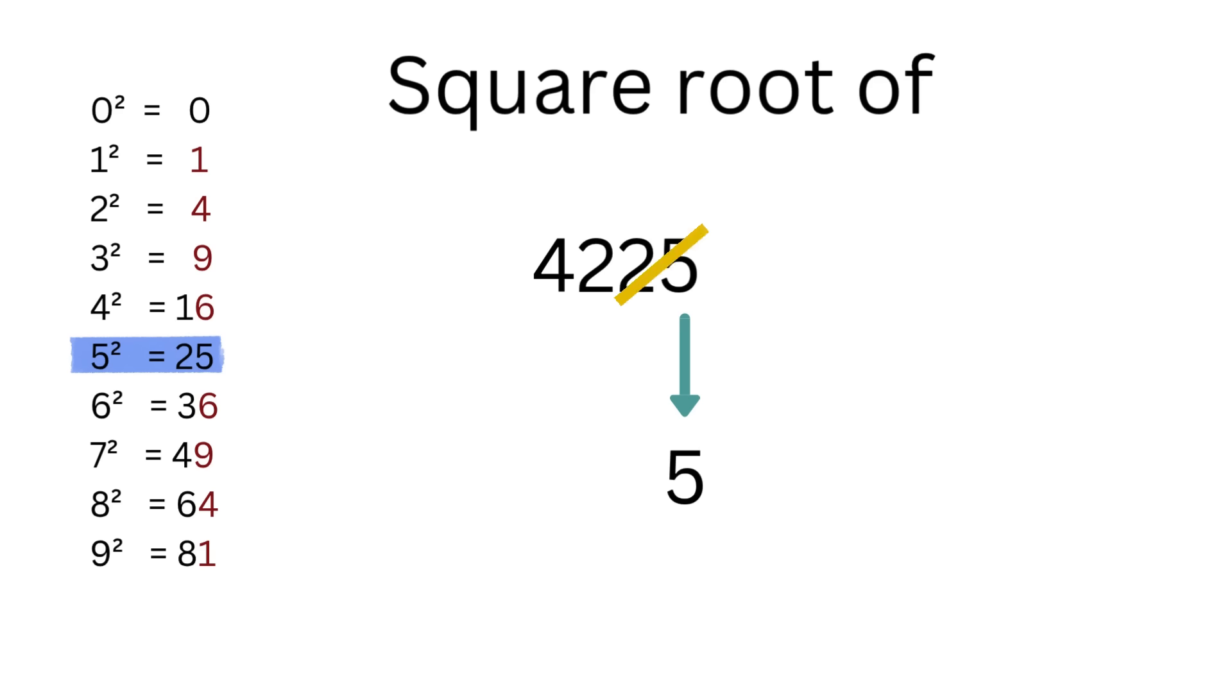We then cross out the last two digits. We now want the square that's closest to 42 without going over. So that will be 6 squared which is equal to 36. So we write a 6 over here. Thus the square root of 4225 is equal to 65.